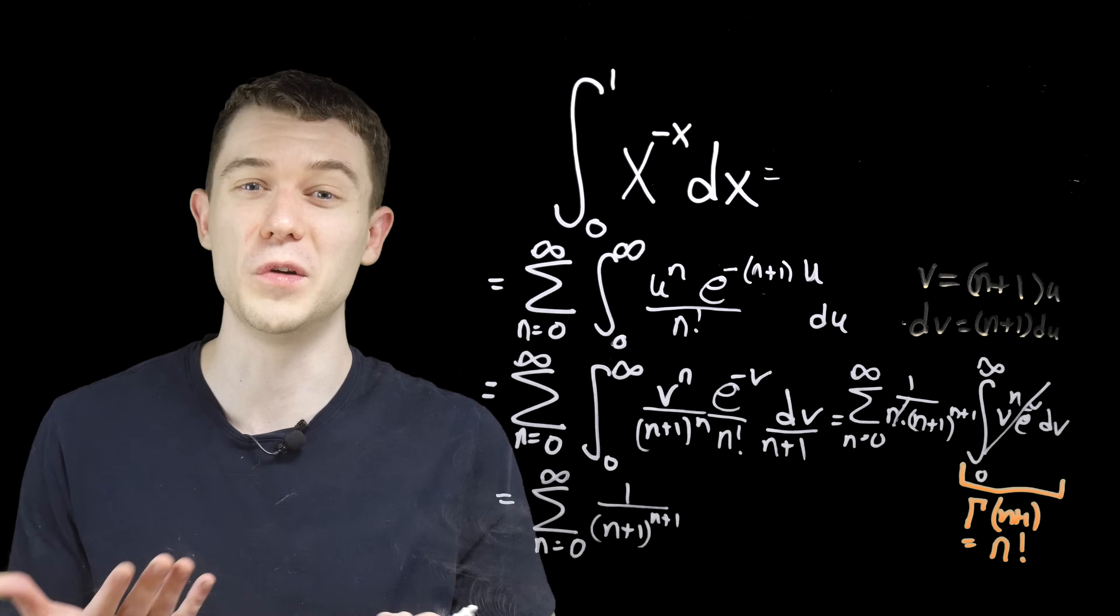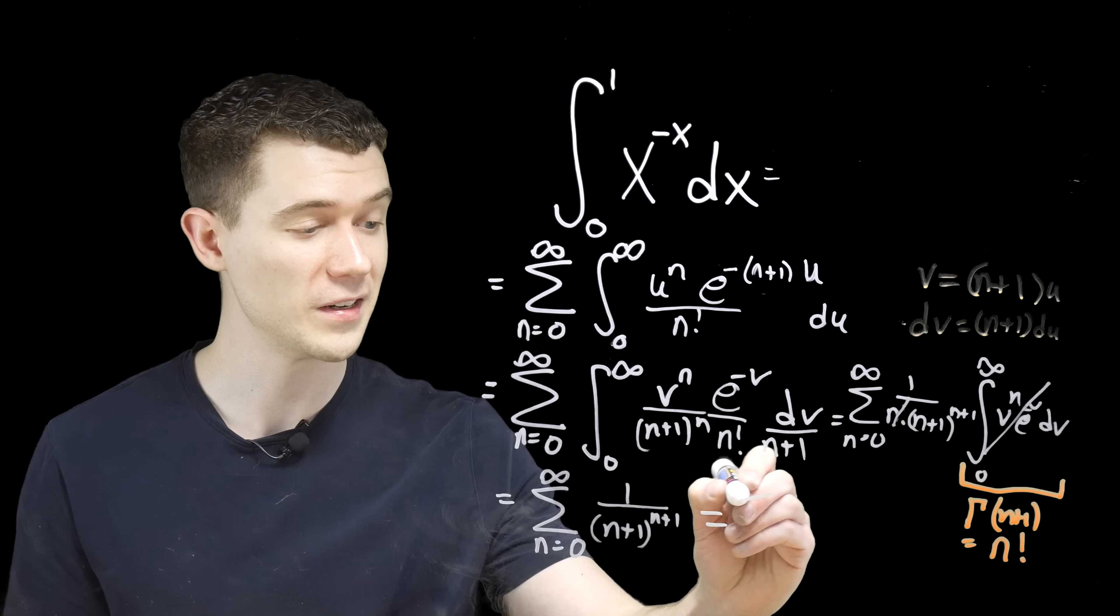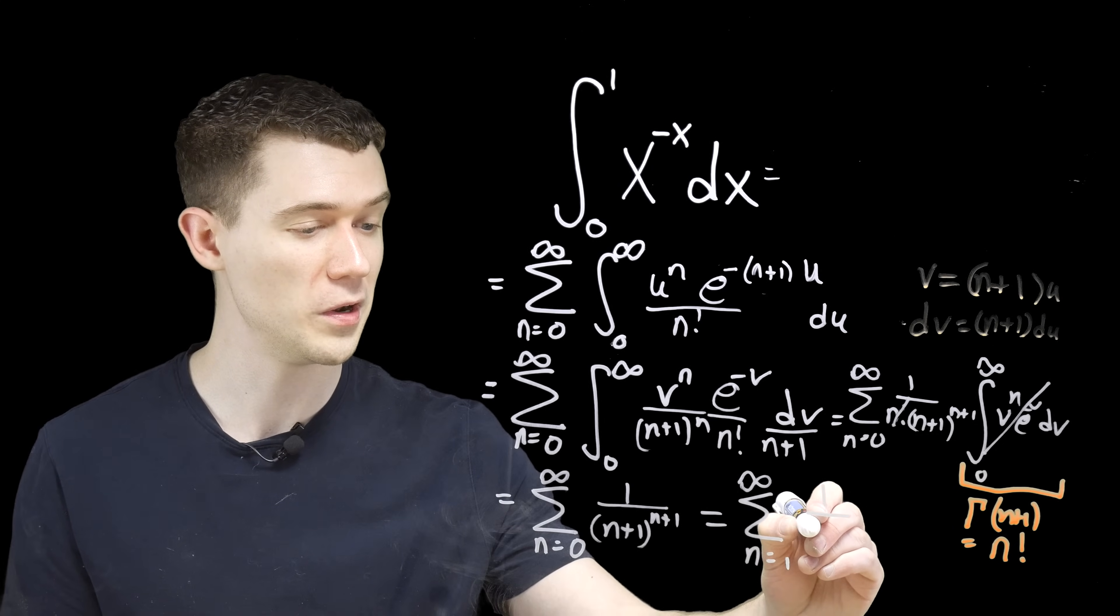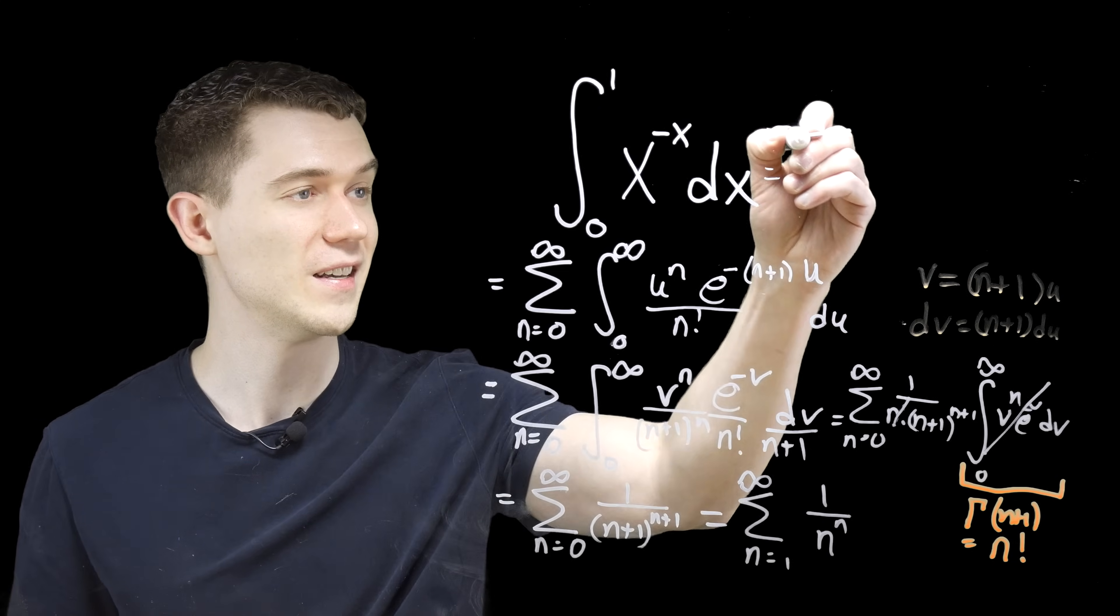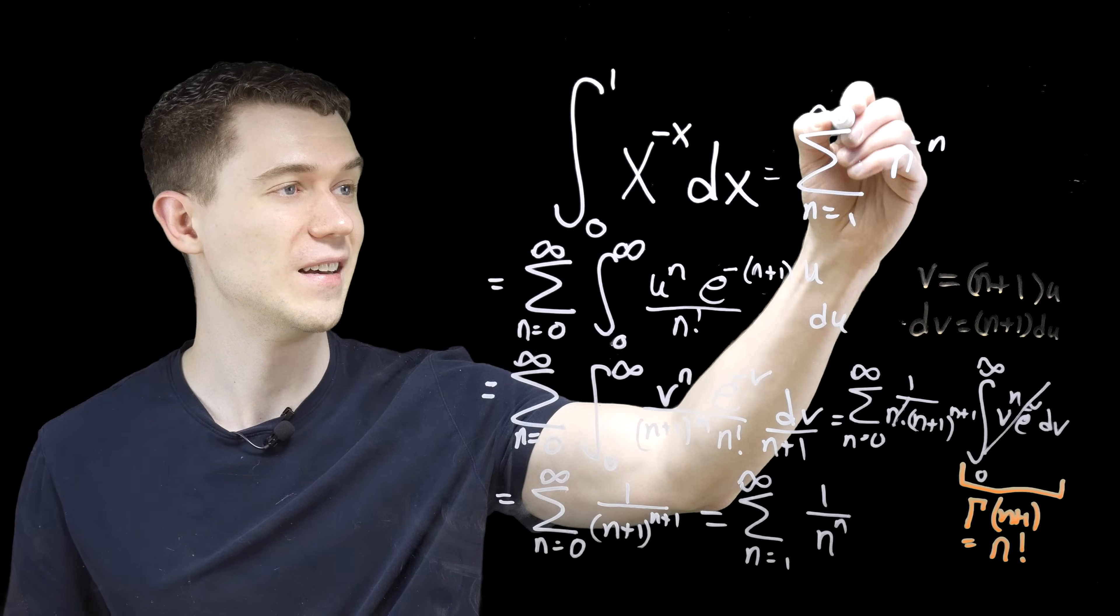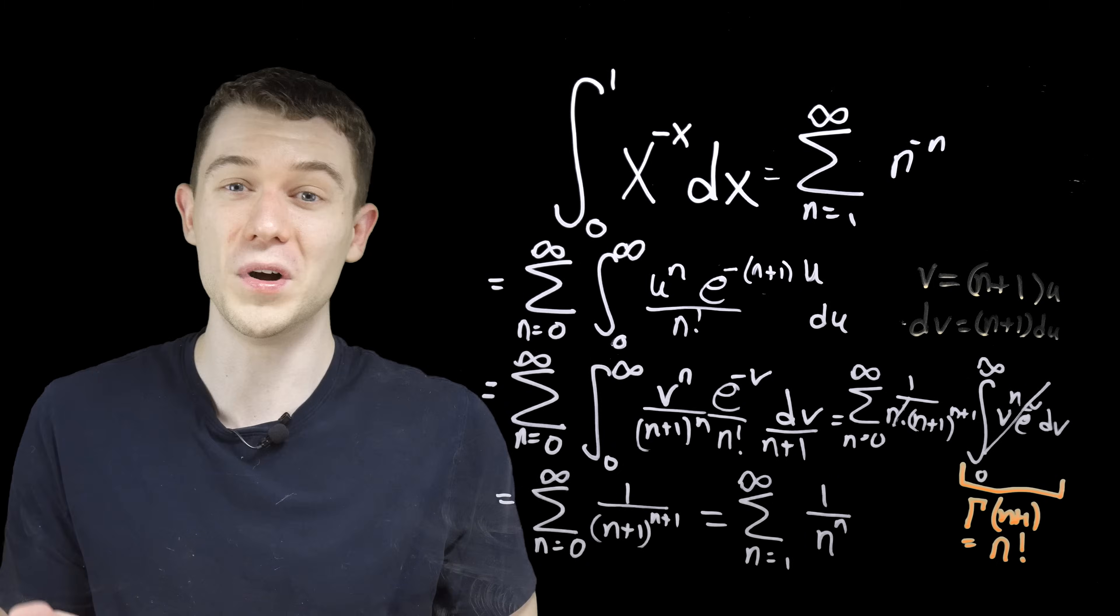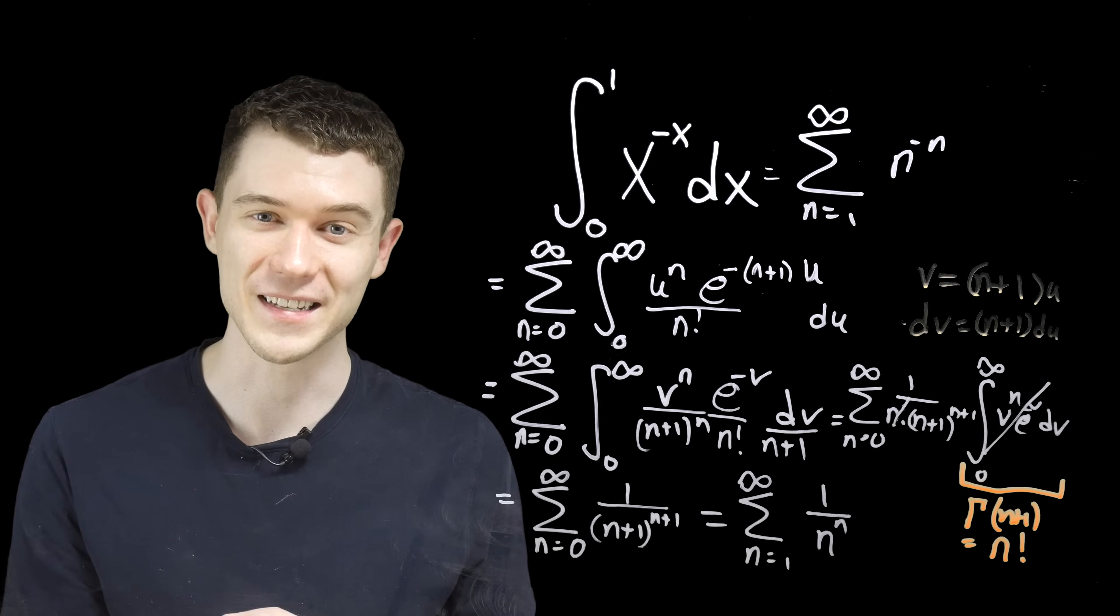We just get the sum from 0 to infinity of 1 over n plus 1 to the n plus 1. And the magic that happens here is when we re-index this. Let's just change the index from starting at 0 to starting at 1. As I say, if we bump the index by 1, we'll bump everything else down by 1. This would change to 1 over n to the n. The n plus 1s just turn into ns. And you could even rewrite this using properties of exponents as n to the minus n. And wow, look at that result. It's basically the same thing. The continuous sum turns into the discrete sum. One's x to the minus x, one's n to the minus n. A pretty dreamlike result if you ask me.